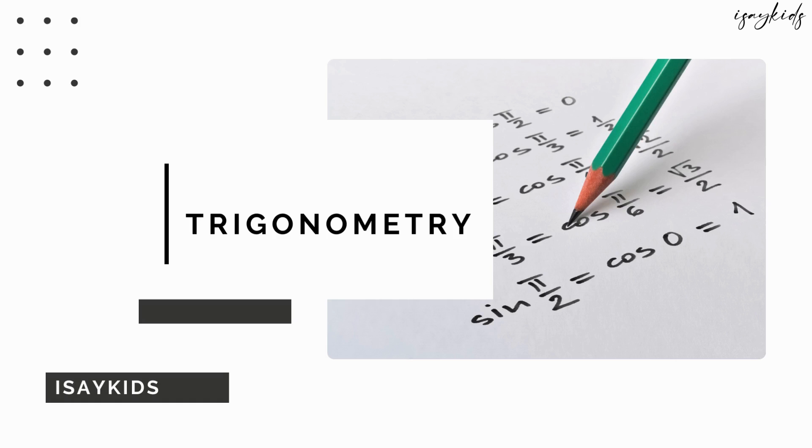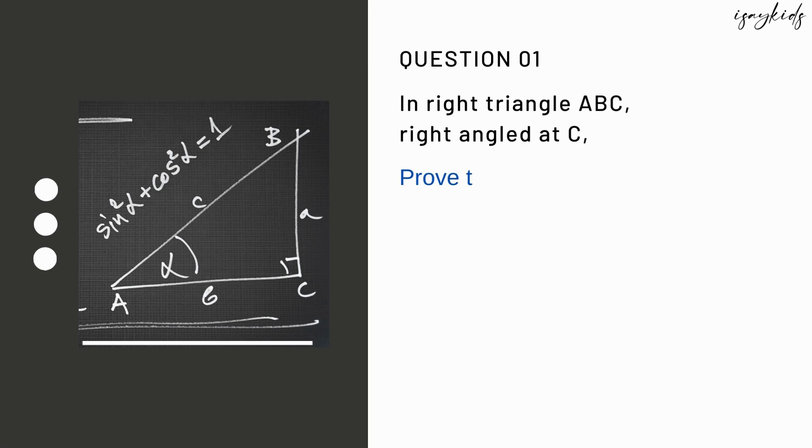Trigonometry is the most interesting chapter of grade 10 maths. We will see the identities of trigonometry in this video. The first one is sin²C + cos²C = 1. In the right angle triangle ABC that is right angled at C.